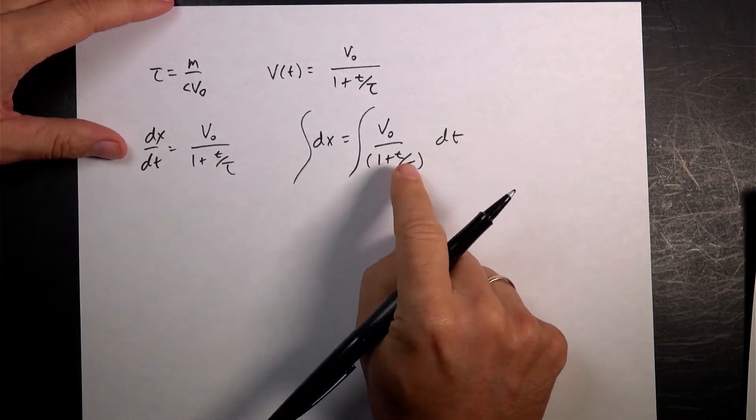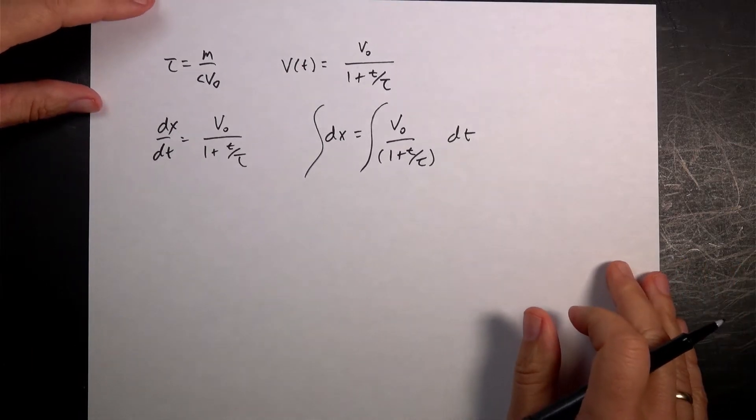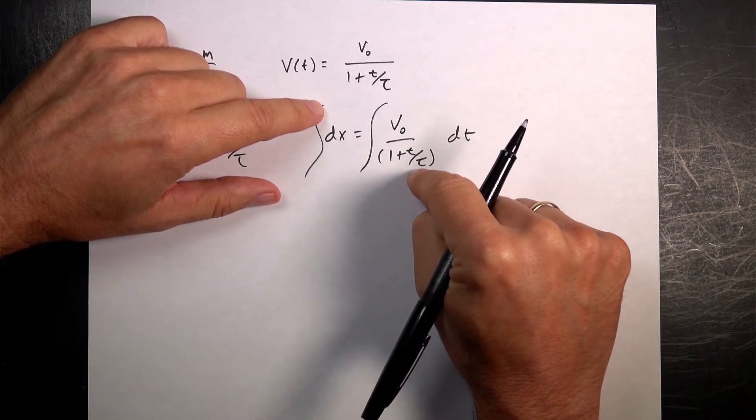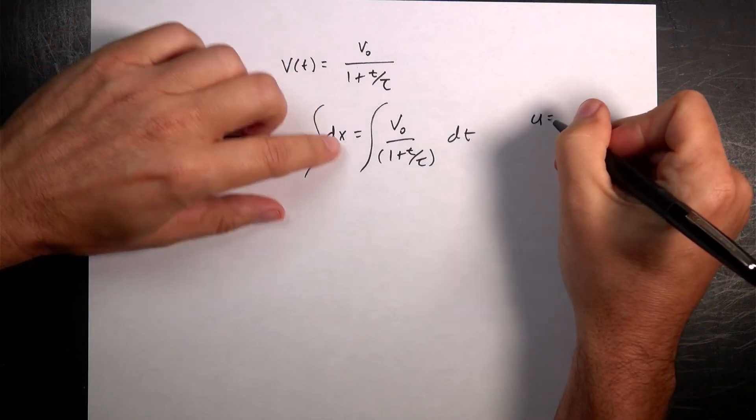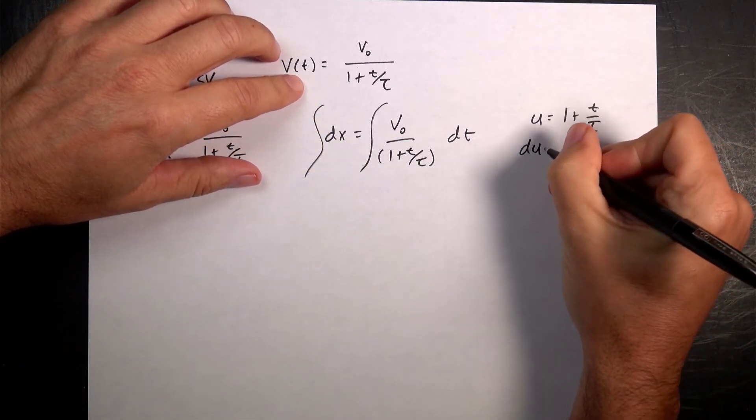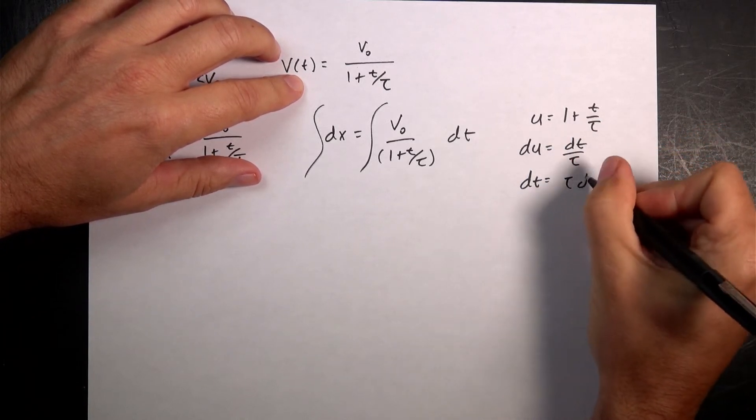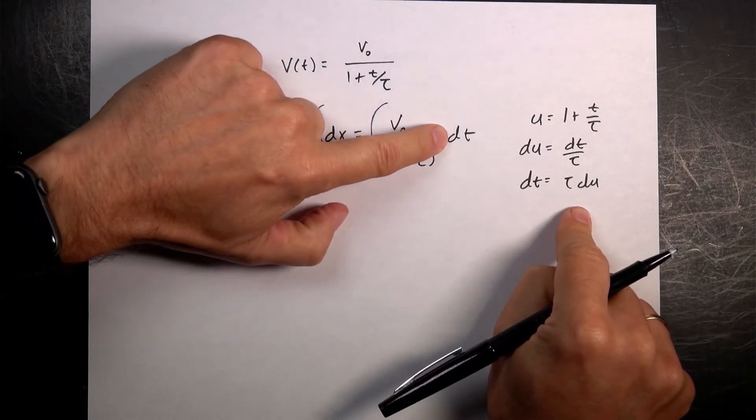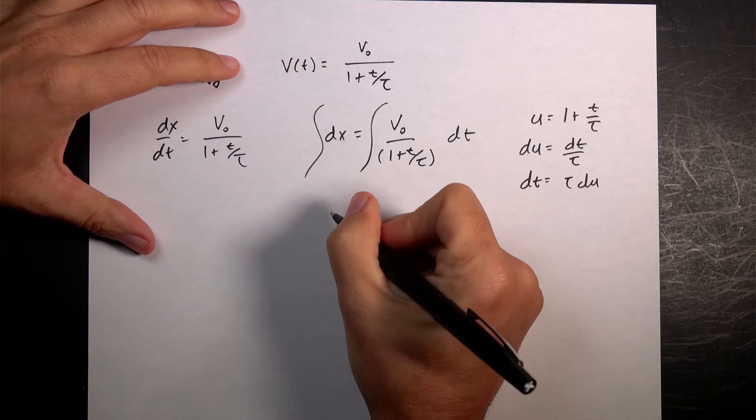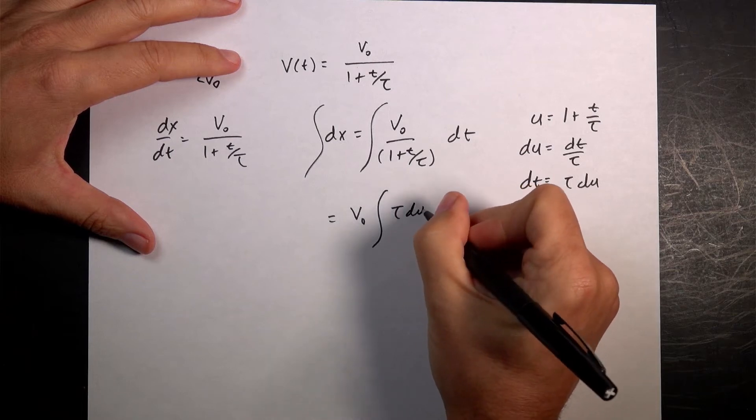So how do I integrate this? Well, this is where having a lot of practice in integration comes in handy, because you can see things, right? I can see, oh, I have like a dt and kind of like over a t. And if it was dt over t, I could integrate that. So let's say u is 1 plus t over tau. And if that's the case, I can take the derivative of this, du is going to be dt over tau. So dt is tau times du. Now I have a dt. I can substitute in tau du, and I can put u for that.